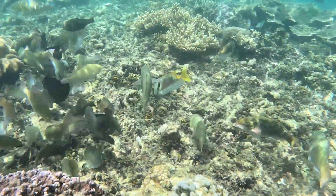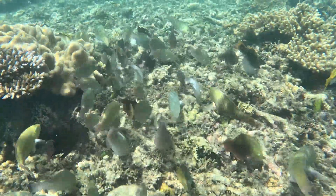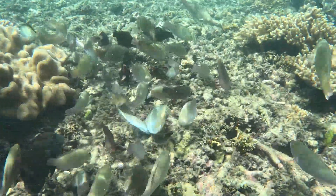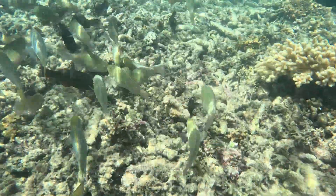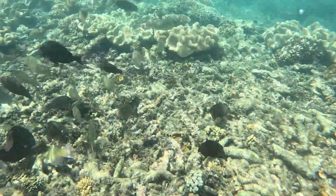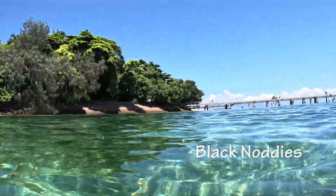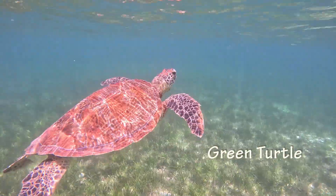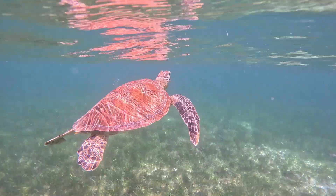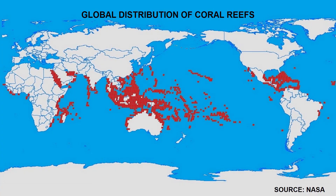Coral reefs are important for biodiversity in the ocean in the same way tropical rainforests are important for biodiversity on land. Coral reefs are inhabited by 25% of the world's marine species. Further, reef sediments can eventually form islands which provide a breeding habitat for numerous bird and turtle species. Despite this high level of biodiversity, they cover only 0.17% of the ocean floor.